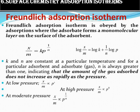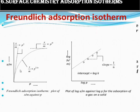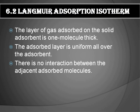Adsorption isotherms are graphs at the same temperature. The Freundlich adsorption isotherm describes adsorption forming a monomolecular layer on the adsorbent surface — at low pressure adsorption is directly proportional to pressure, at high pressure it is independent of pressure, and at moderate pressure it is proportional to p raised to 1/n. The Langmuir adsorption isotherm describes adsorption where the gas layer is one molecule thick, the adsorbed layer is uniform, and there is no interaction between adjacent adsorbed molecules — similar to chemisorption.